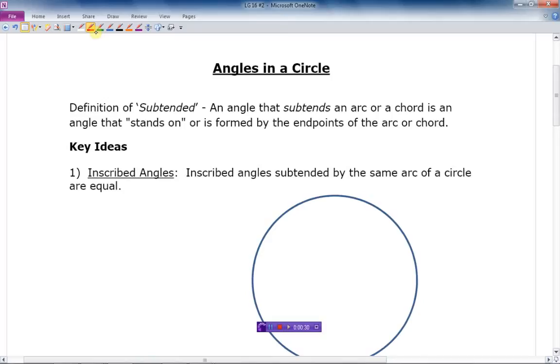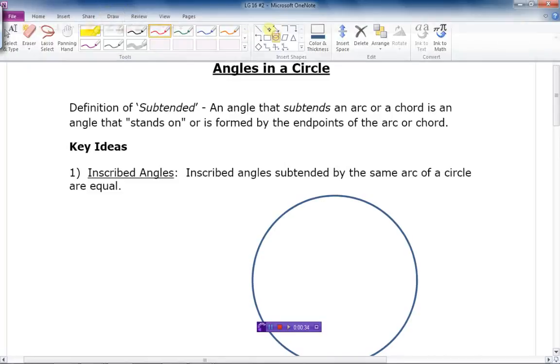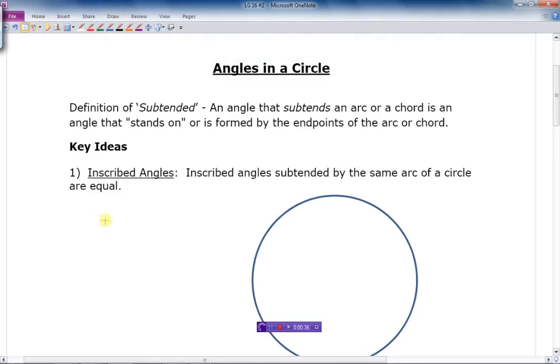So if I have an angle, let me quickly draw a circle here. If I draw a circle, there's a circle, and what it's talking about here is that if I have any kind of an angle, so let's just say I draw an angle like this and like this.